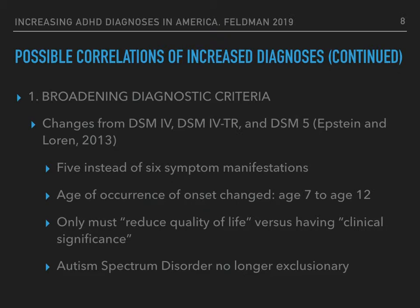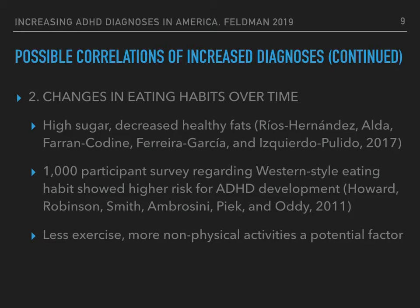A second possible correlation of increased diagnosis is the changes in eating habits over time. A study in 2017 showed that high sugar and decreased consumption of healthy fats increased the likelihood of receiving a diagnosis for ADHD. Another study with over 1,000 participants regarding Western-style eating compared to a healthy or more Eastern or traditional style of eating showed higher risk of ADHD development. It is also important to understand that less exercise and more non-physical activities could be a potential factor as well.